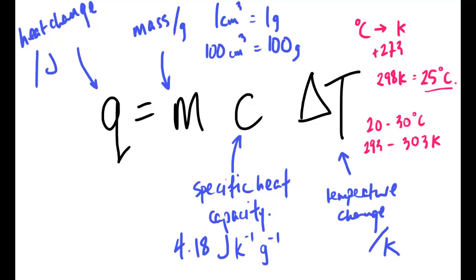The temperature change remains the same whether you use degrees Celsius or kelvin. Just be aware if they're asking you to calculate a temperature that needs to be in kelvin. But for normal situations where we're looking at heat change and ultimately enthalpy change, we can just use the values as given. So: Q equals MC delta T — heat change equals mass multiplied by specific heat capacity multiplied by the temperature change.